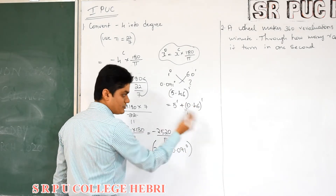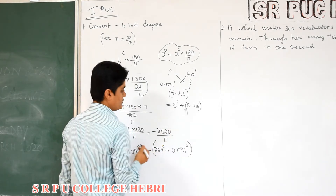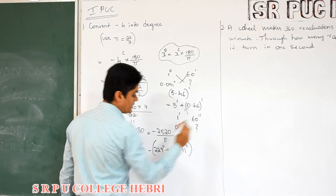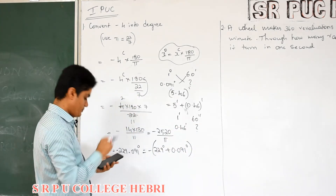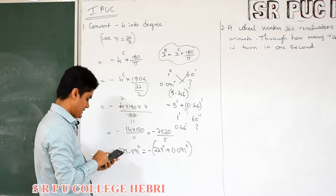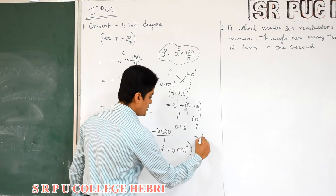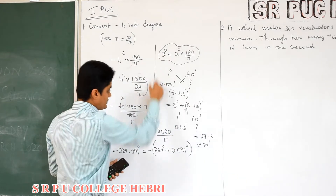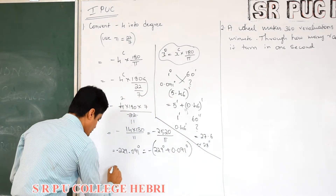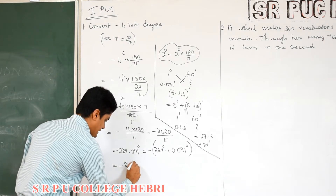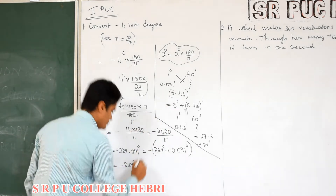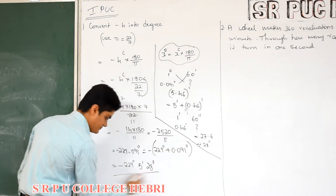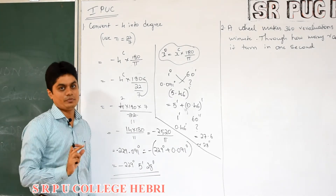The fraction minute should be converted into seconds. 1 minute is equal to 60 seconds. So 0.46 minute in terms of seconds: multiply 0.46 by 60, this gives 27.6, approximately 28 seconds. This is also part of the answer. So the final answer is minus 229 degree, 5 minutes, and 28 seconds. The final answer must be in this format: degree, minute, and second.